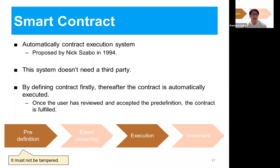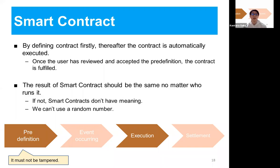I explain smart contracts. It is an automatic contract execution system, which was proposed by Nick Szabo in 1994. This system doesn't need a third party for contract execution. Before execution, users define a contract. If a user agrees with it, thereafter the contract is automatically executed. To execute the contract safely, pre-definition must not be tampered. The result of a smart contract should be the same no matter who runs it. If not, smart contracts don't have meaning — different people would pay different prices for the same things, and that's not fair. Thus, we can't use a random number in a smart contract.